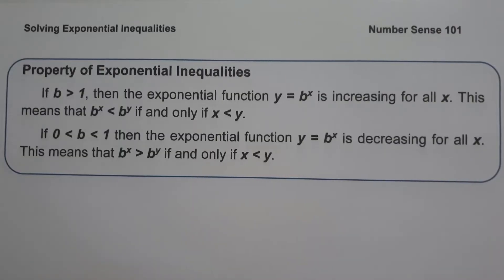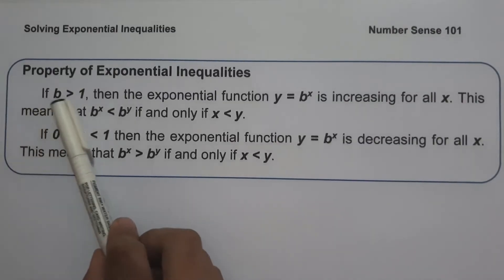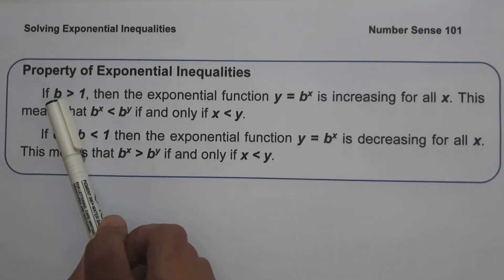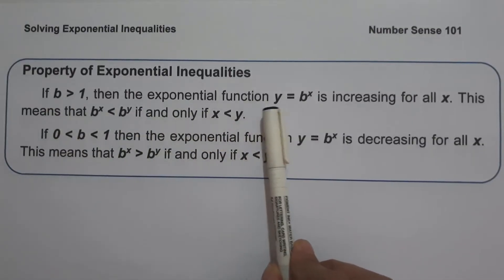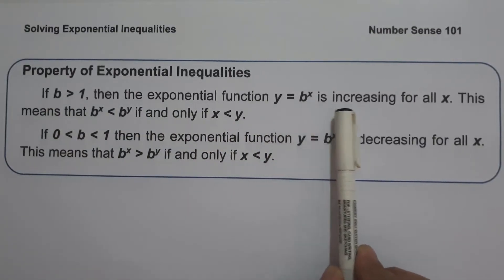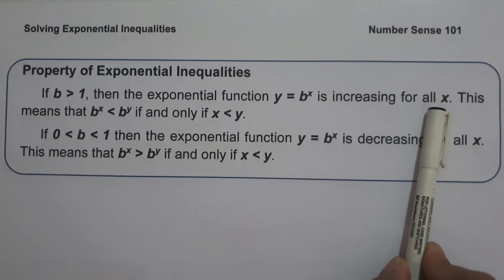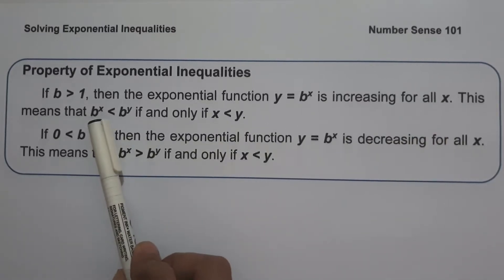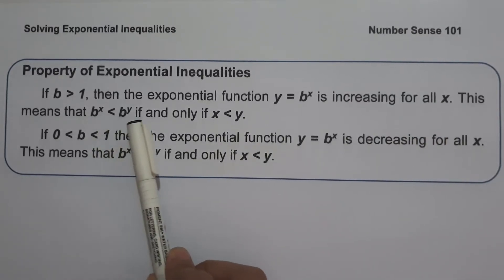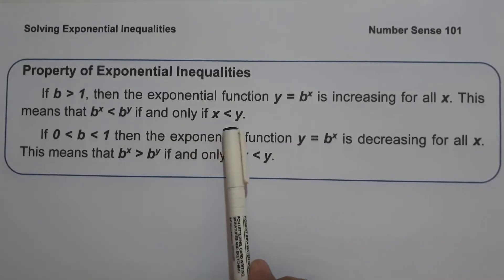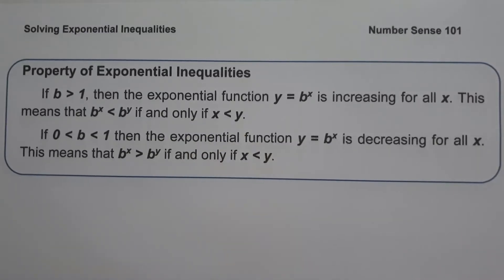In solving exponential inequalities, there are two different properties to remember. The first one: if b is greater than 1 — b being the base — then the exponential function y equals b raised to x is increasing for all x. This means that b raised to x is less than b raised to y if and only if x is less than y. That means if the base is greater than 1, the direction of the inequality is retained.